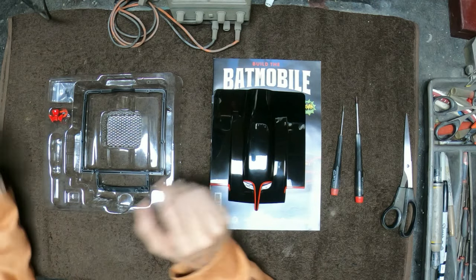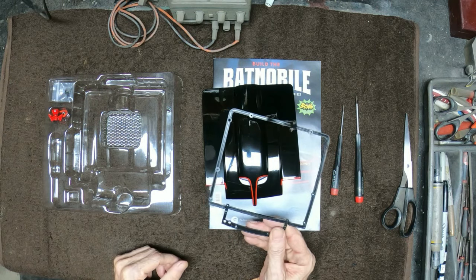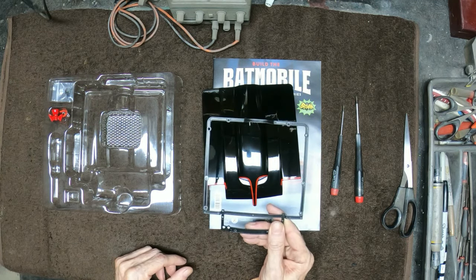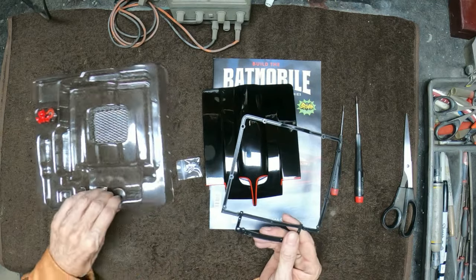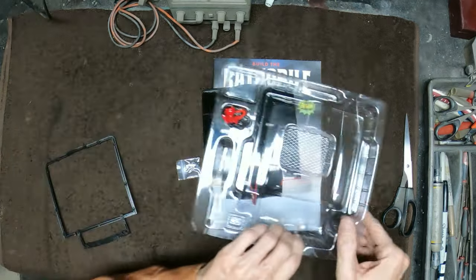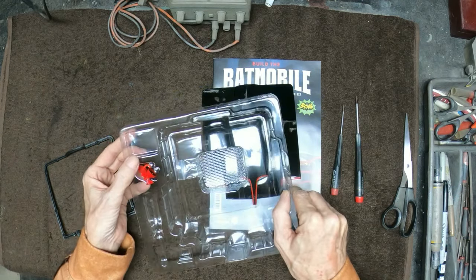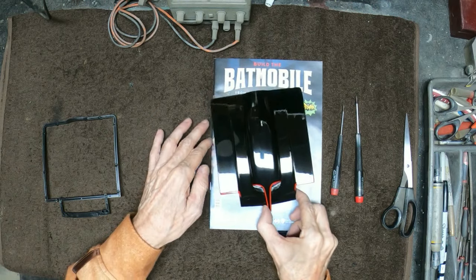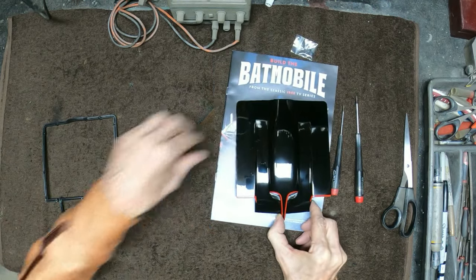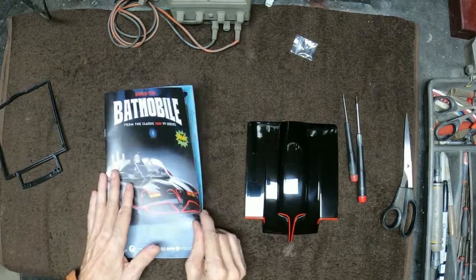The first thing that looks like we're going to be doing today is we've got the hood assembly here and we've got this framework that's going to go underneath of it and we've got to attach that with some screws. So let's take a look at what the instructions show. We're also going to be doing a little bit of work with the bat phone here, it looks like. Let's take a look at what the assembly instructions are telling us to do here.